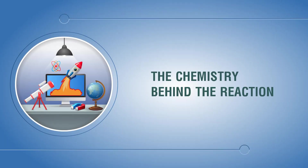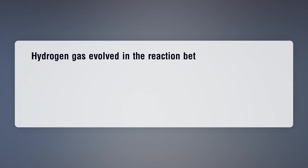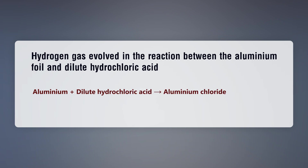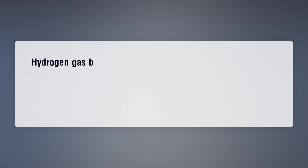The chemistry behind the reaction: hydrogen gas is evolved in the reaction between aluminium foil and dilute hydrochloric acid. The balanced equation is: 2Al + 6HCl → 2AlCl₃ + 3H₂.